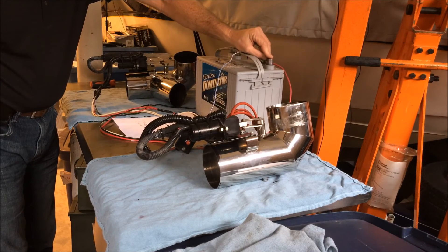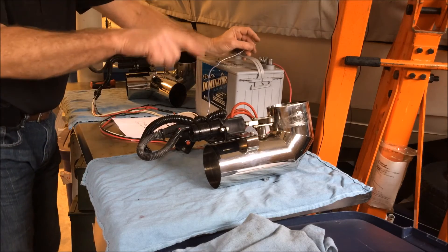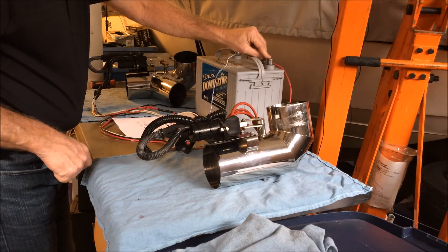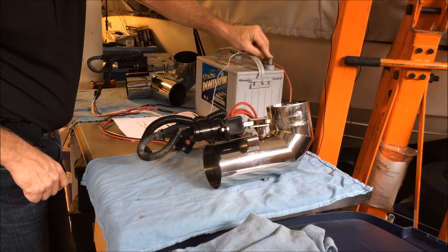As you can see the starboard exhaust is significantly slower than that of the port. And that's how you test the course of the diverter system.